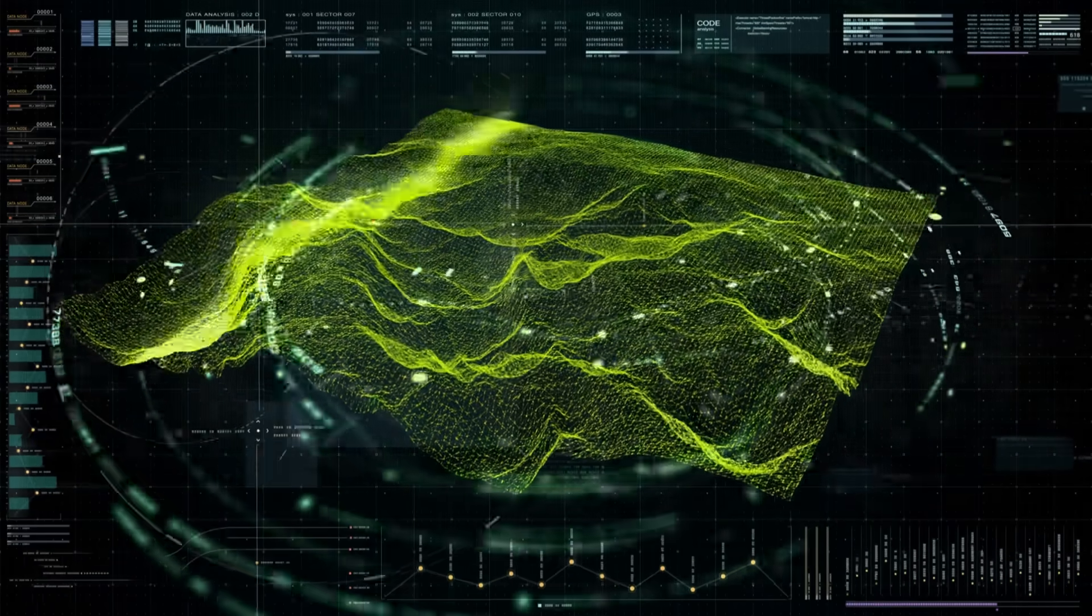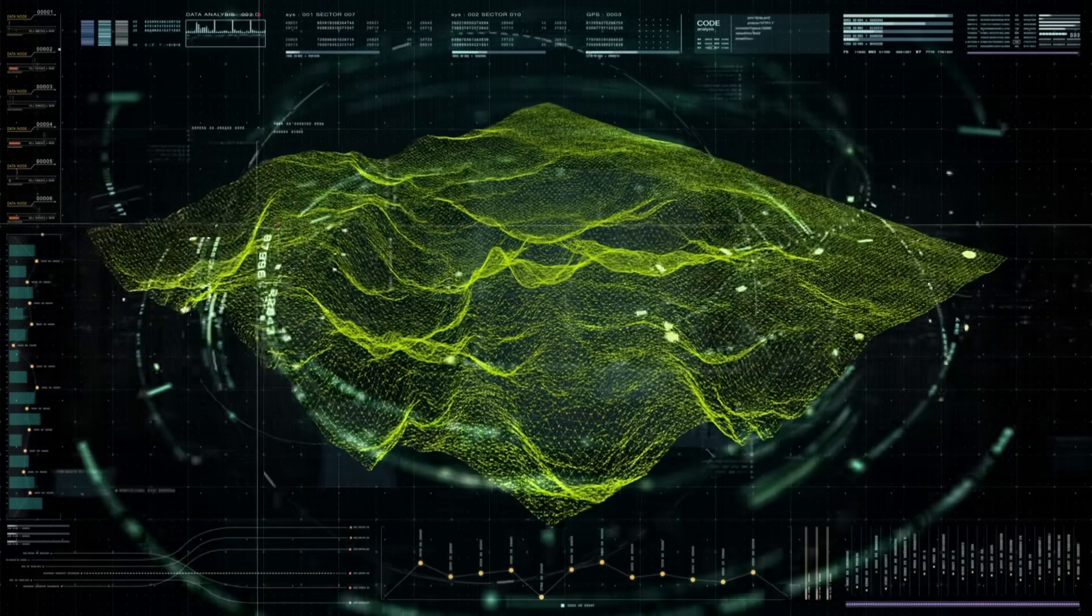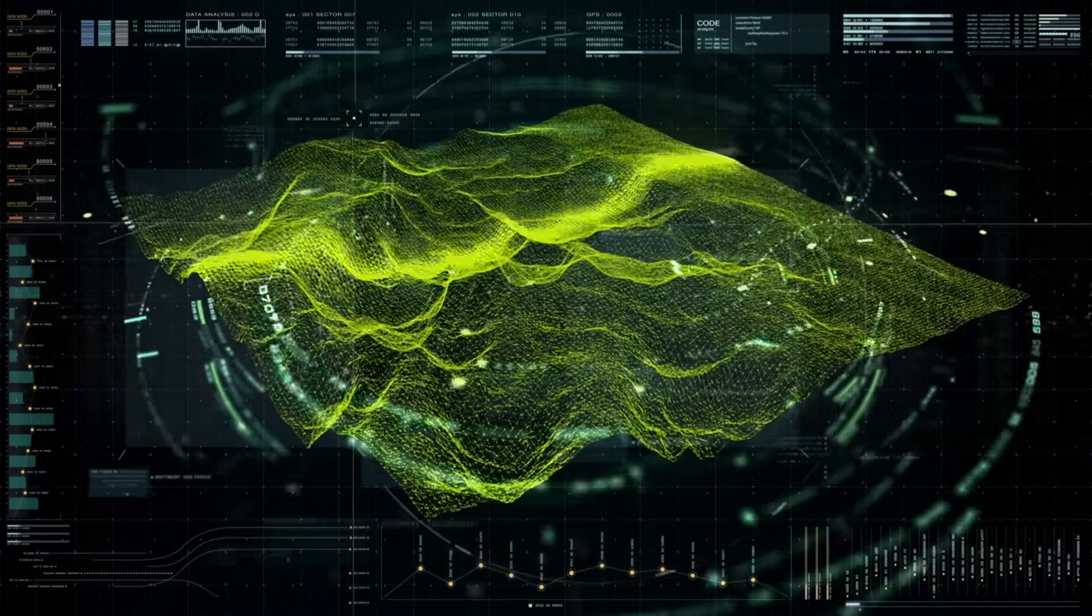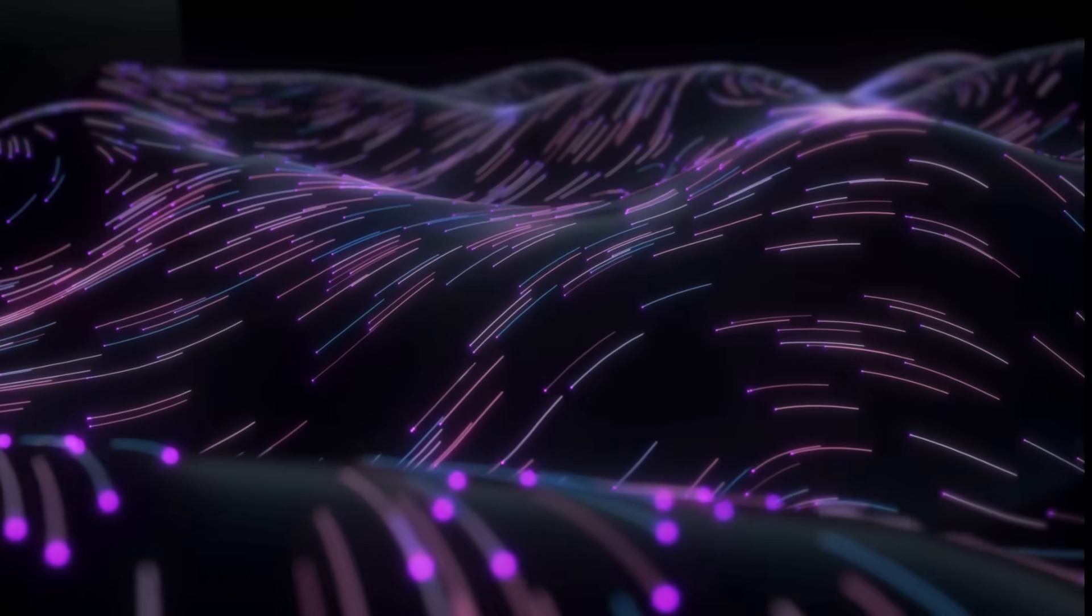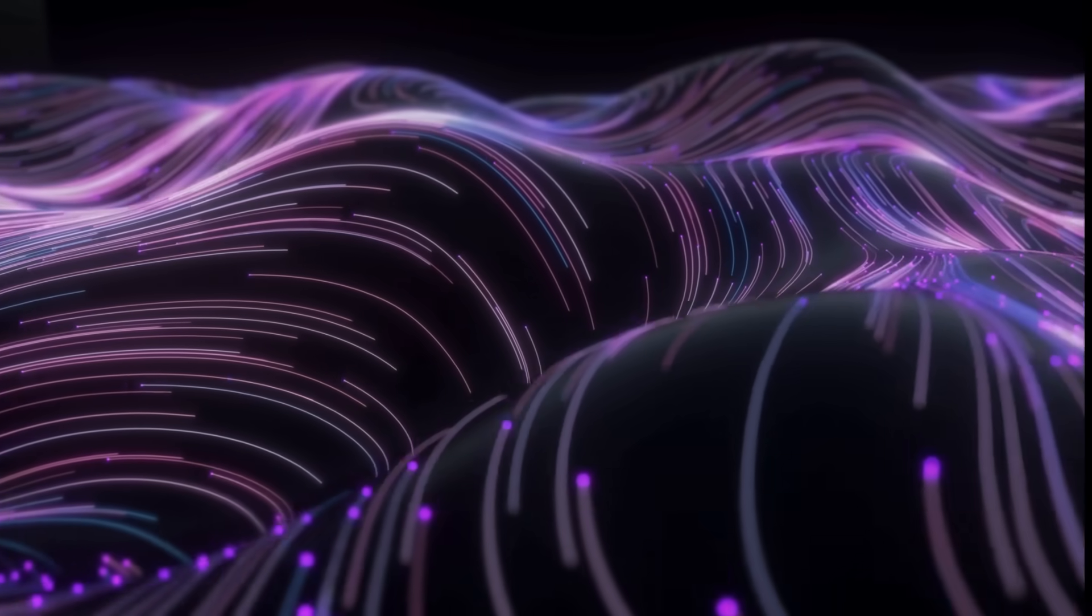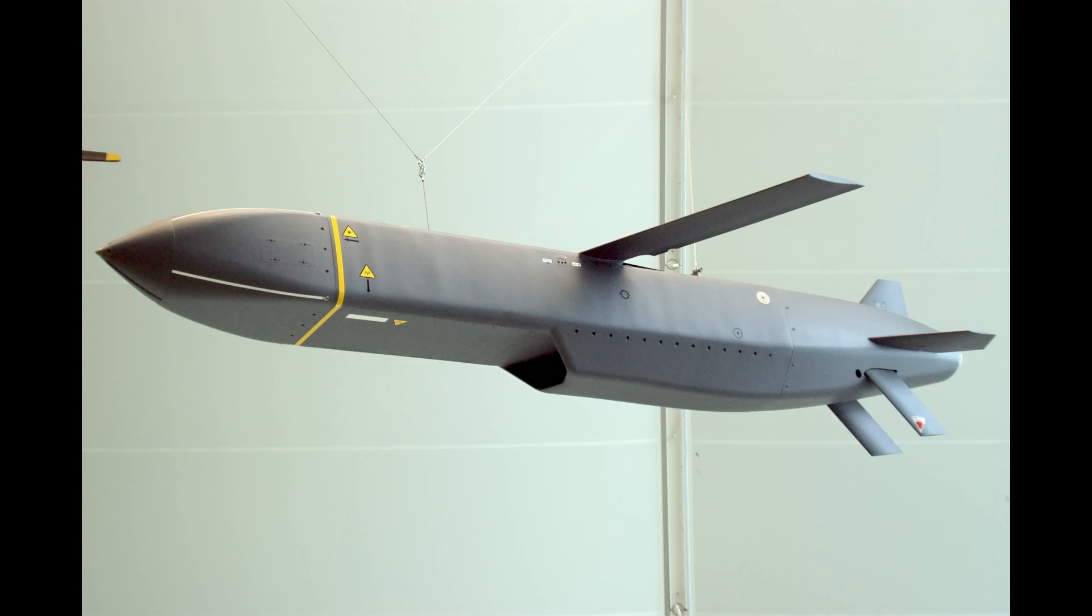As the missile flies, it uses its onboard radars to compare the terrain it is flying over with the stored map data, allowing it to follow the landscape closely. This system is what allows cruise missiles to fly at such low altitudes. One of the most well-known cruise missiles is the American Tomahawk missile. Many other countries have developed similar systems.